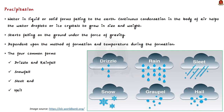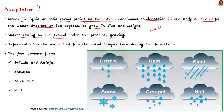What is precipitation? It is defined as water in liquid or solid forms falling to the earth. It happens when continuous condensation in a body of air helps water droplets or ice crystals to grow in size and weight. When this happens, the air is unable to hold them anymore and they start falling to the ground under the force of gravity. The form precipitation takes is largely dependent upon the method of formation and the temperature during formation.